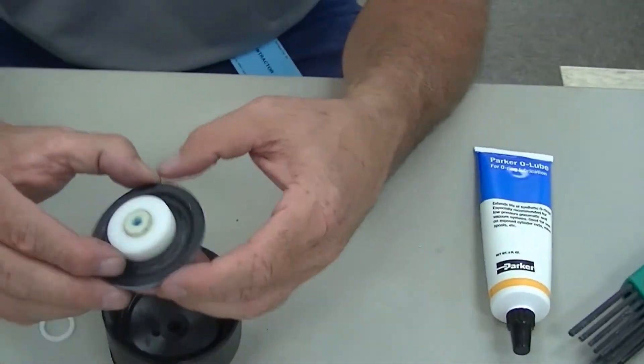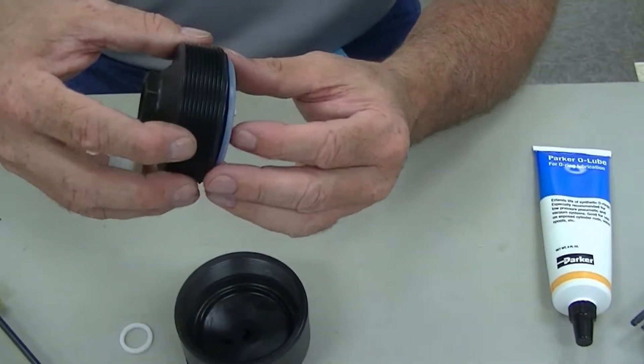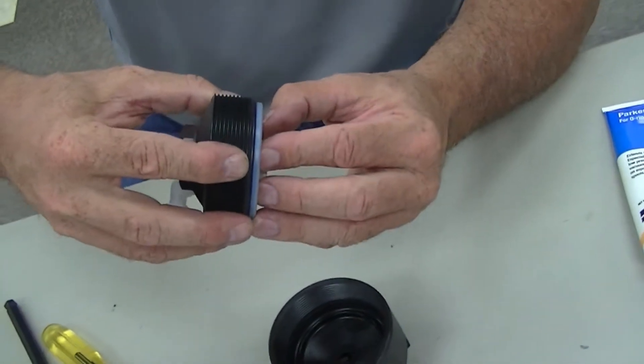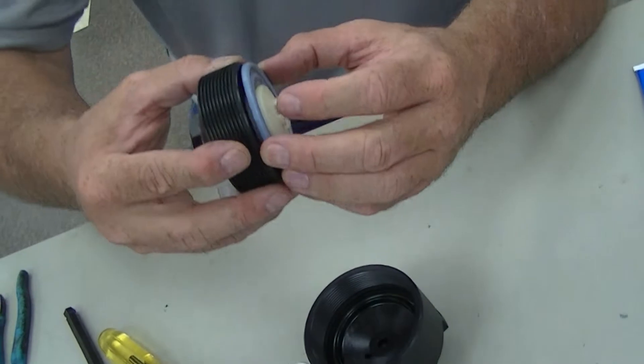Because what happens is, I set that in there, I put this part on, this is what seals right here. So what I want to do when I get on there is that this will slide on here a little bit so it allows me to screw it on and get a good seal.